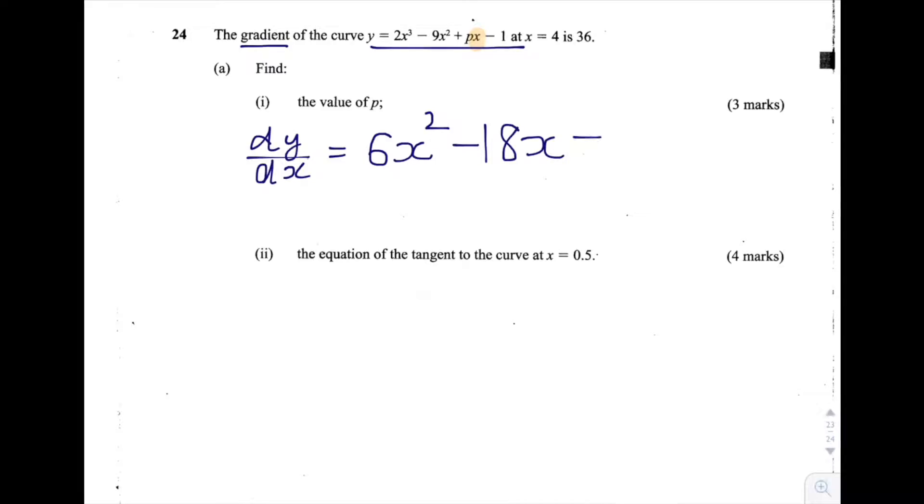px becomes simply p, because when we divide x by x, we get 1. And then we lose that minus 1 term altogether. So we have 3 terms here for dy by dx.